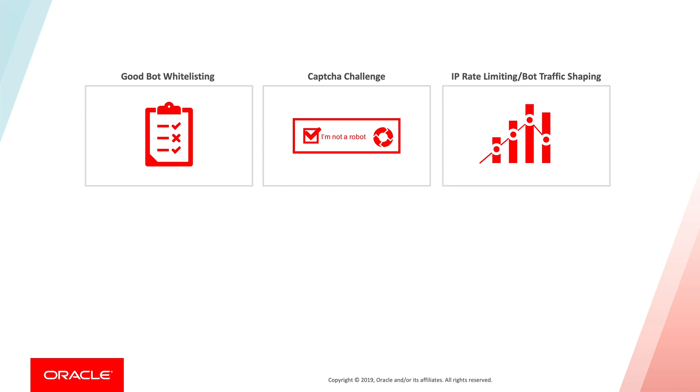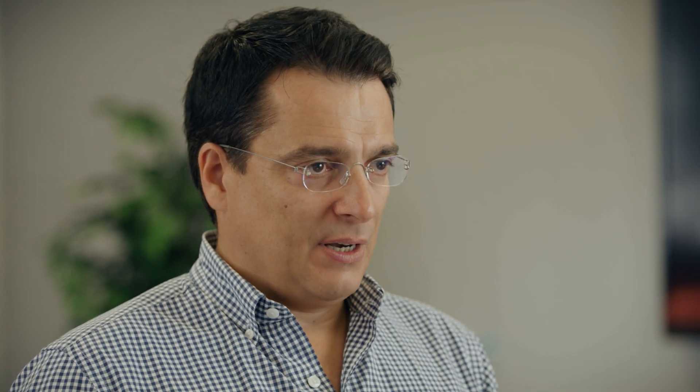The second technique that is part of this first generation bot management is IP rate limiting. The idea was very simple: humans can hit an application or website maybe two or three times per second per IP address. If it's higher than this, we would block it, because a human cannot browse an application that fast. The hackers found this to be very simple to defeat, so they invented the botnet. The botnet means that instead of having one machine hitting your application, they have hundreds of thousands of machines. So if each of these IP addresses sends a very small number of requests per second, the IP rate limiting would not be able to identify this as coming from a compromised machine rather than a human.